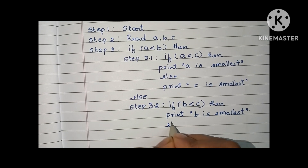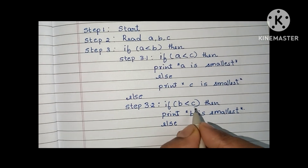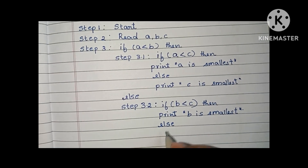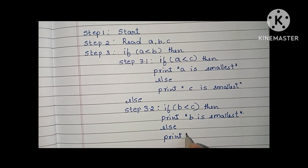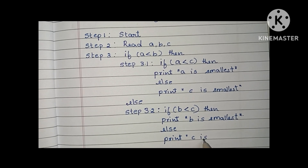Else, if b less than c is false, we print 'c is smallest.'